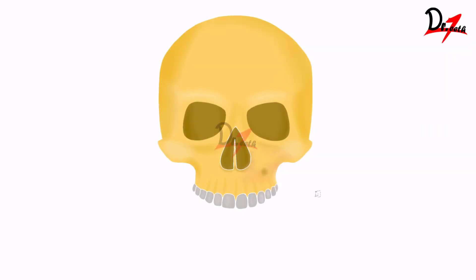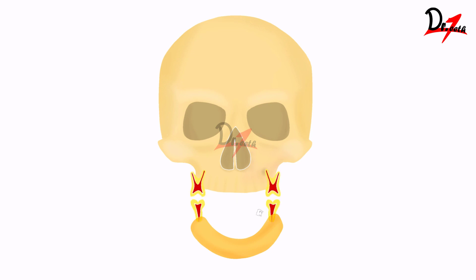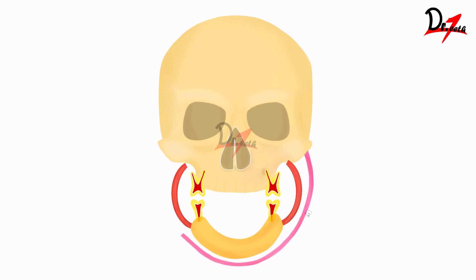Now let us suppose we have cut through this model from side to side. So this is our mandible, this is our teeth, this is the buccinator muscle on both sides, and this is the skin. Now as you can see here, we have a space between the buccinator muscle and the skin. This space right here — this is the buccal space. So the infection which happens in the buccal space is the buccal space infection.